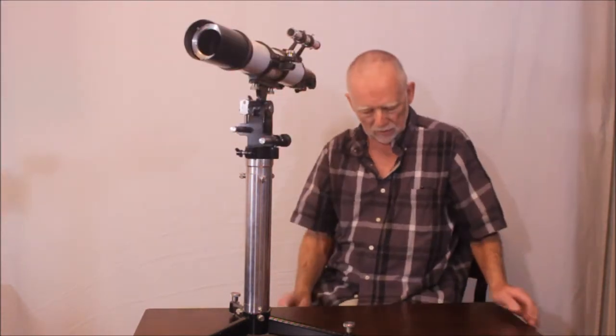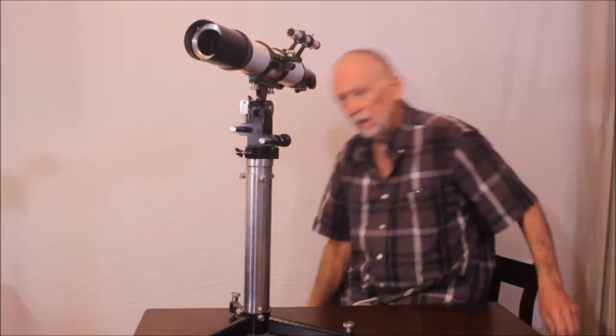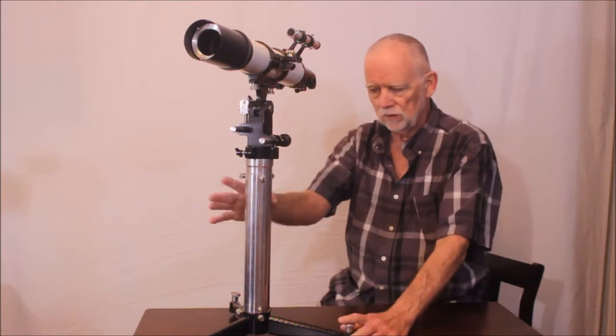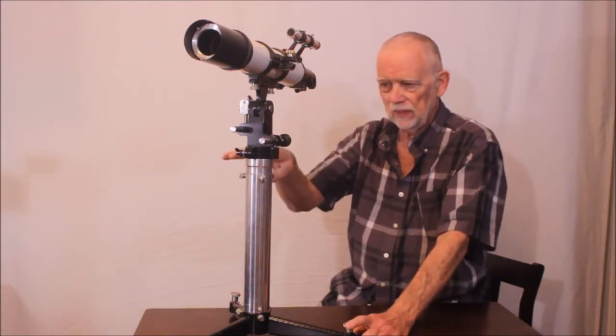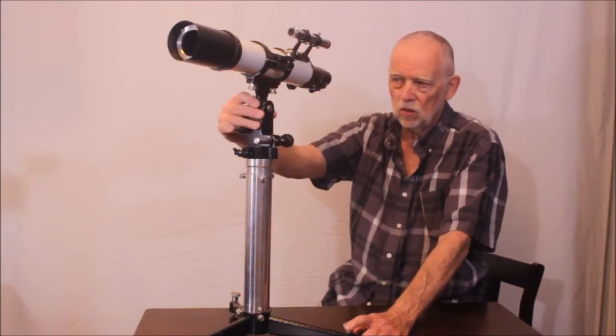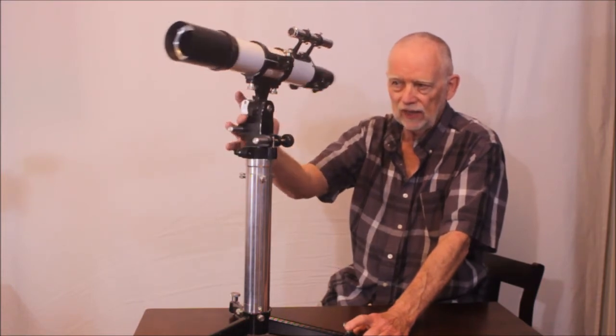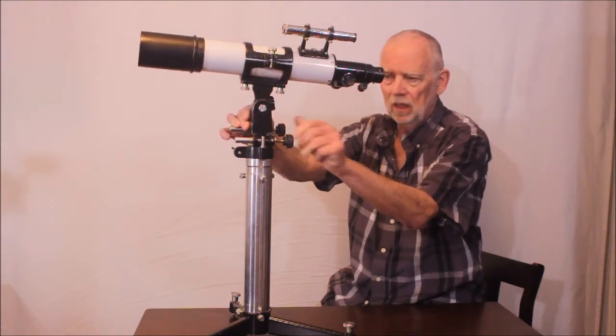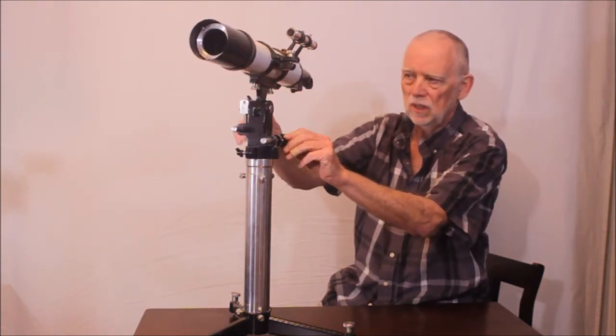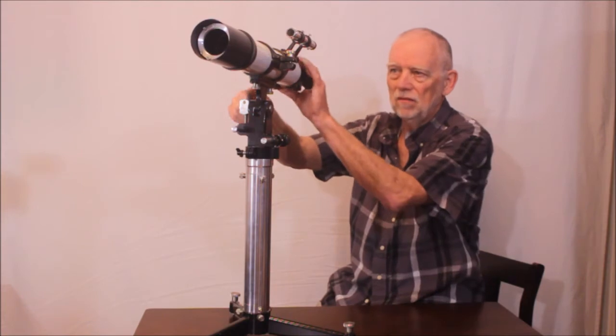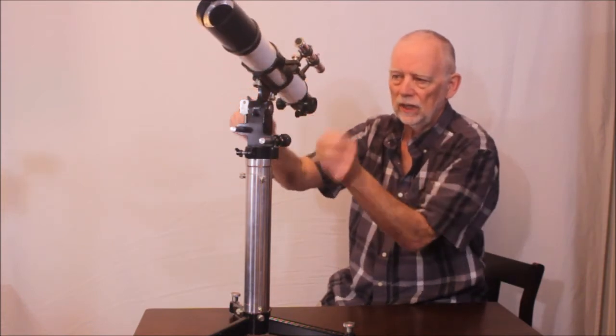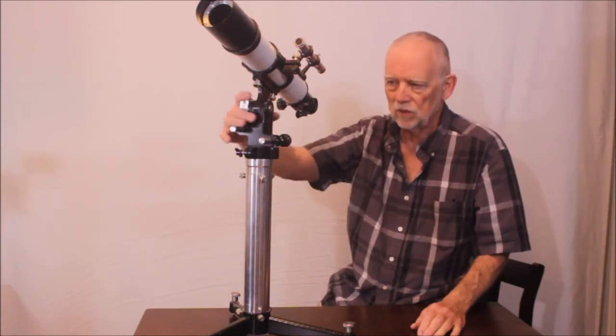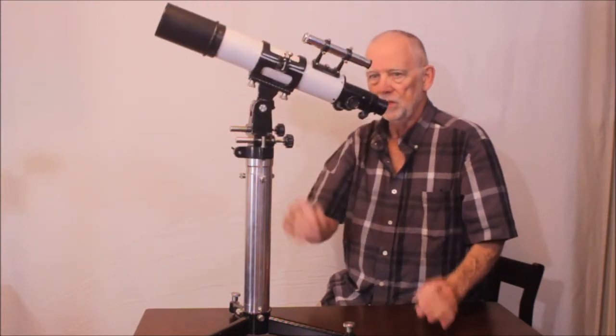You can probably tell that I'm sitting up a little higher than I was with the Takahashi. This is a taller mount. I made this mount from the table up to here. This is of course a Unitron head. An Altaz head from a Unitron. Superb. Very well made. A nice utility Altaz kind of a mount with really good high quality slow motions. It's got an advantage over the Takahashi in that respect. It's really superb.